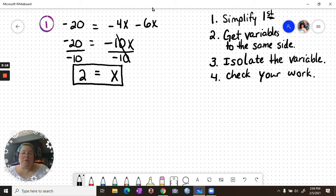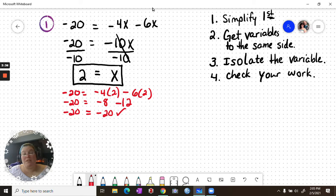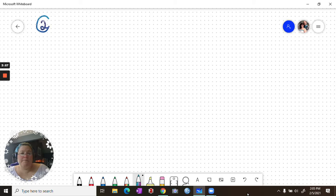I can double check this by going back to the original and doing negative 20 equals negative 4 times 2 minus 6 times 2. Negative 20 equals negative 8 minus 12. Negative 20 equals negative 20. That works. We get the same thing on both sides of our equation. Pause here if you need to get this down in your notes. And then I am going to clear and work a second example.